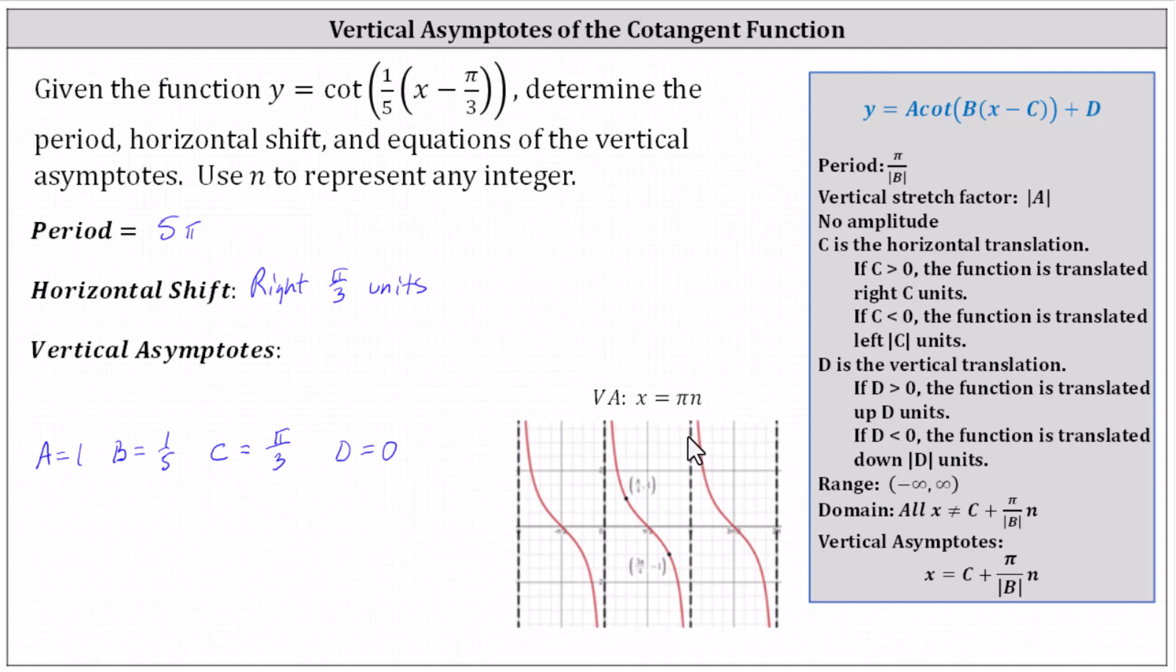However, we also know we sometimes have a horizontal shift or phase shift, which is why if we look at the notes, the equations for the vertical asymptotes are given by x equals c, which is the phase shift or horizontal shift, plus multiples of the period, given by pi divided by the absolute value of b, times n.